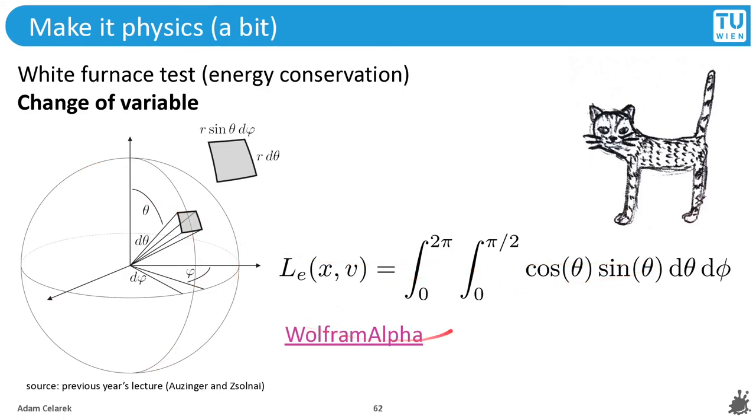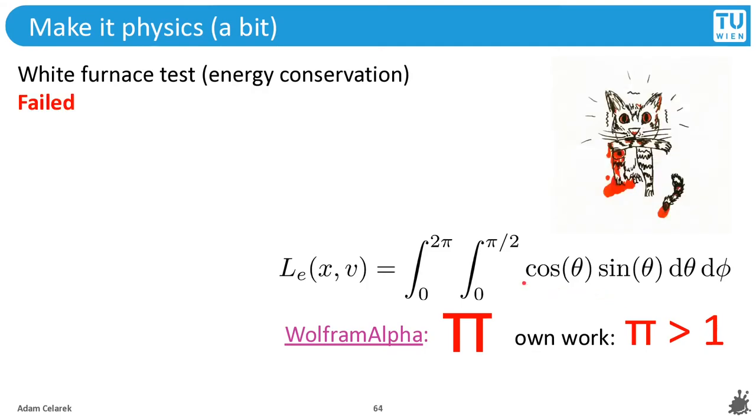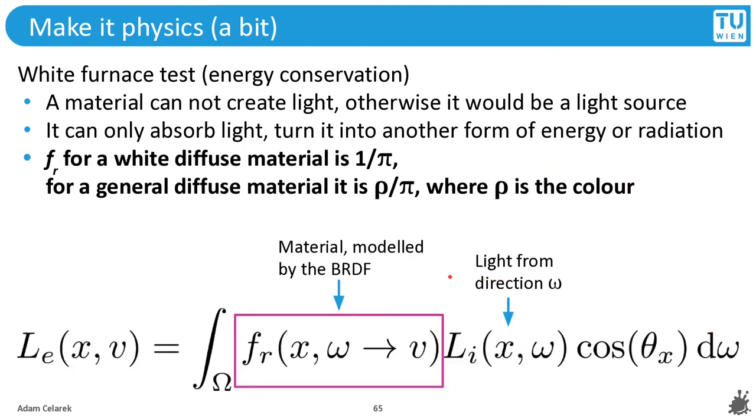We can compute the result using Wolfram Alpha, and it says π. And well, π is greater than 1. Hmm, didn't we say that it should be smaller than 1? Oops, this white furnace test failed. Okay, and the resolution is that the BRDF of a white material is 1 over π. In general, diffuse materials is ρ over π, where ρ is the color.